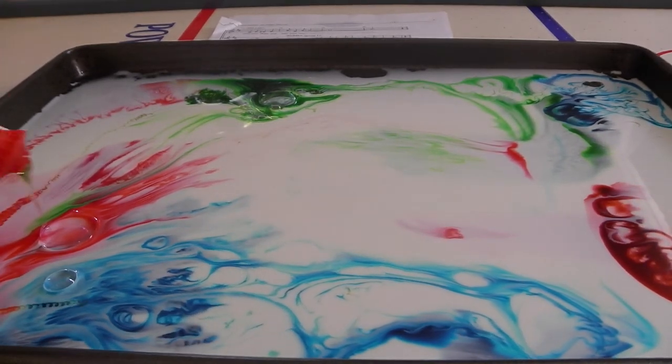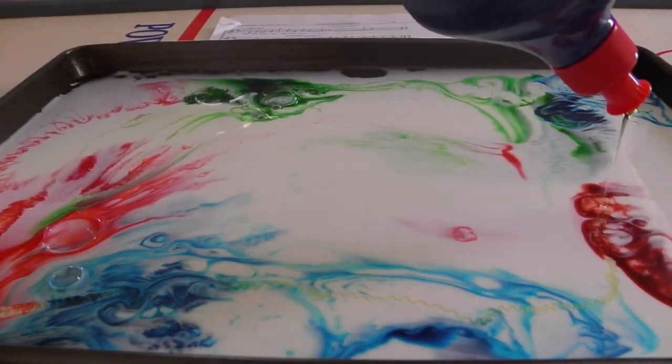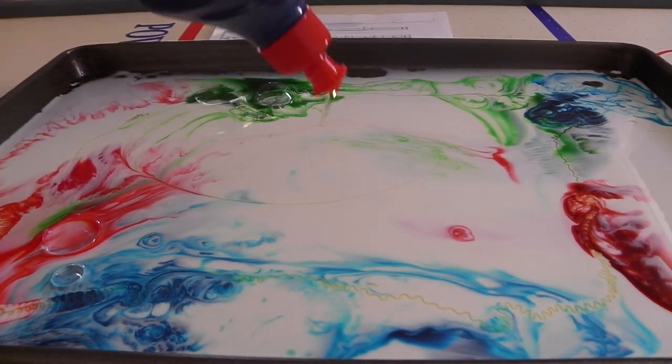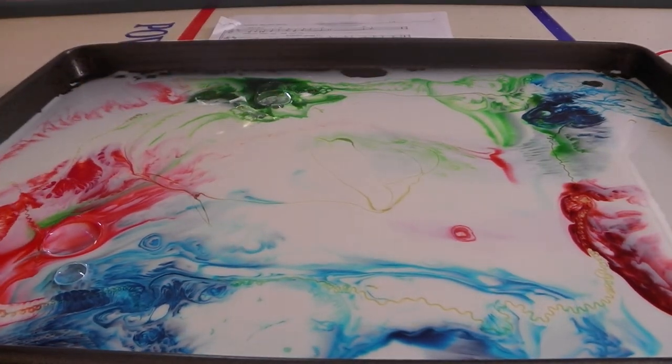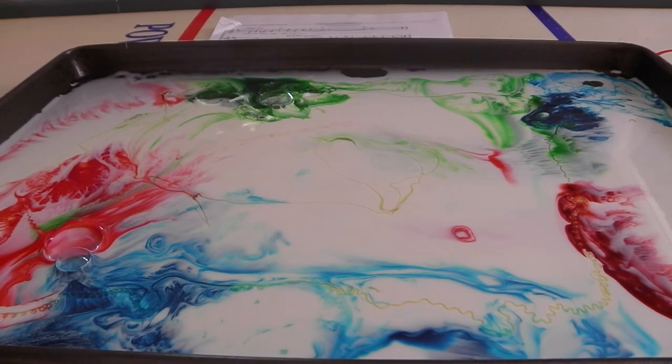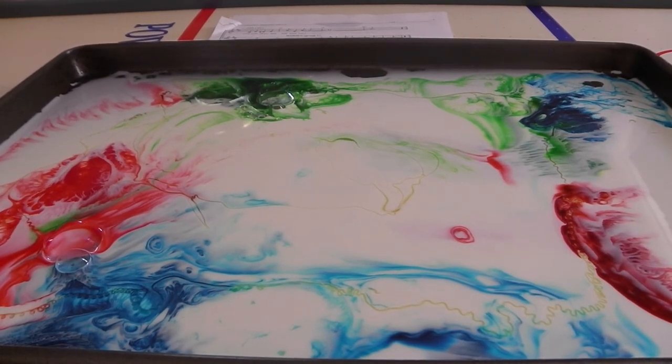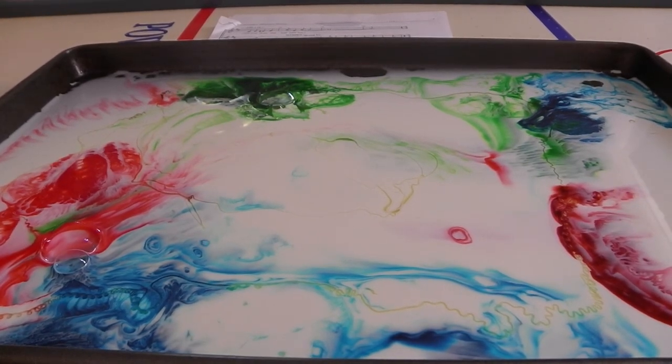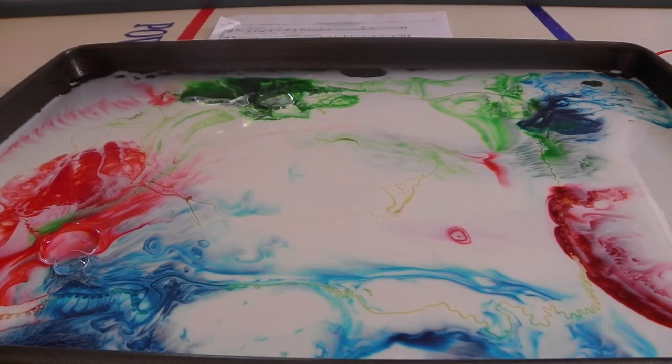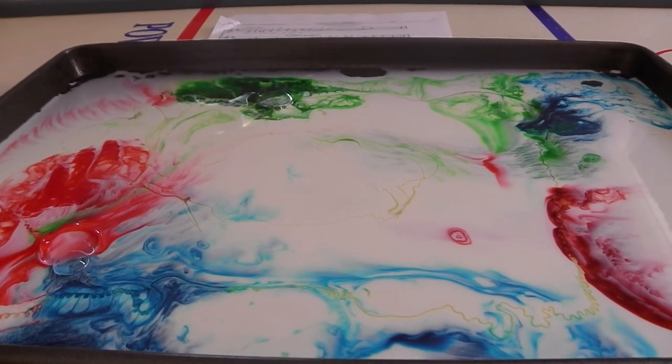How cool is that? All of the dishwashing liquid is reacting with the fats in the milk and is sort of breaking down all of the fat in it. Because basically what happens is, well, we know where the colour comes from, obviously. It comes from food colouring.